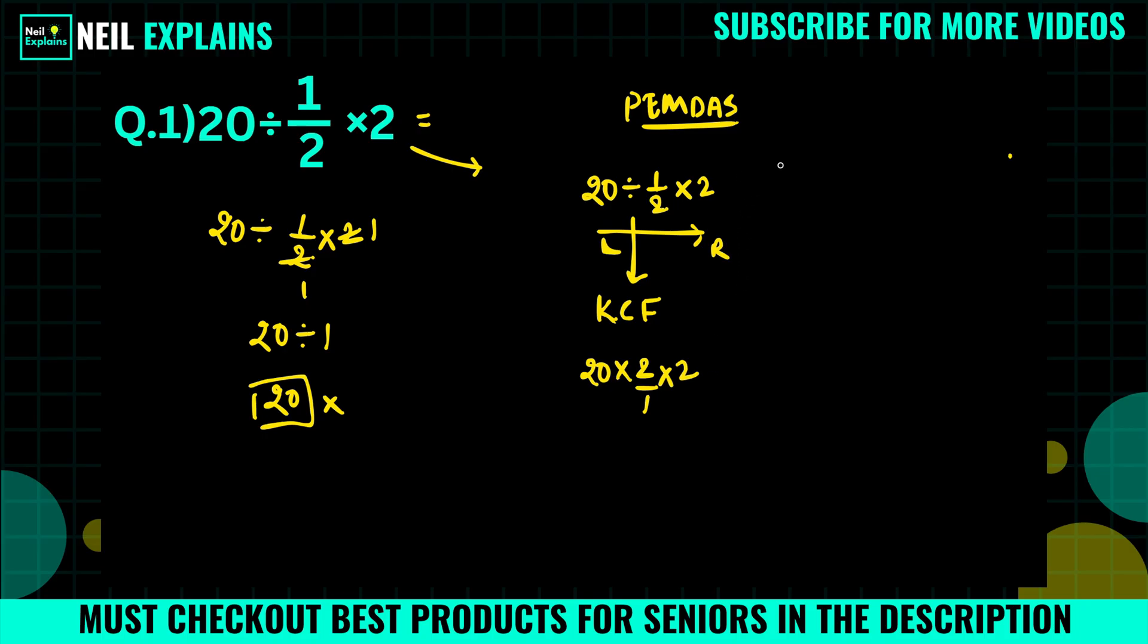So what will be our final answer? This will be 20 times 2 times 2. 20 times 2 that is 40. And 40 times 2 that equals to 80.